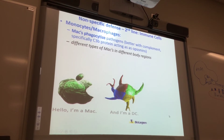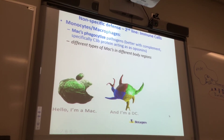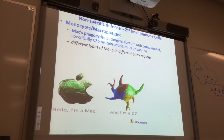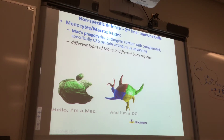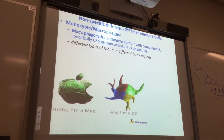If you are a foreign invader and complement proteins have bound to you, then you're going to be more appetizing to a macrophage. That process is called opsonization. When you coat the foreign invader with opsonins, that foreign invader looks really appetizing to the macrophage through the phagocyte. Opsonization is coating the foreign invader with opsonins.